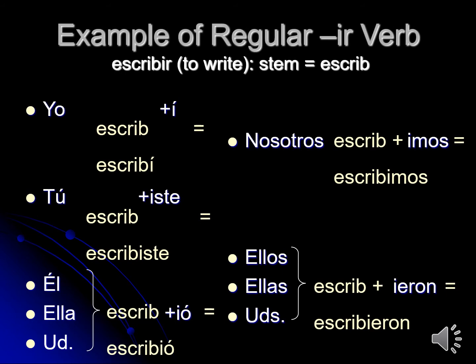Let's use escribir — 'to write' — as the example for an IR verb. Yo escribí, tú escribiste, él/ella/usted escribió, nosotros escribimos — remember that's exactly the same in present tense, so you do need to use context clues there — ellos, ellas, or ustedes escribieron.